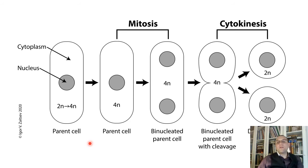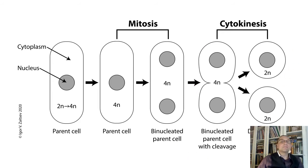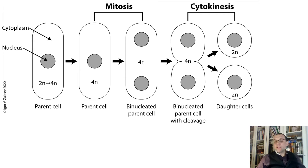Before we go any further, we should make it clear that mitosis refers to the duplication and division of the nucleus and of the chromosomes, while cell division — also known as cytokinesis — refers to the actual division of one entire cell into two daughter cells. During mitosis, a nucleus divides to form two nuclei, each with the same kinds and number of chromosomes as the parent or original cell.